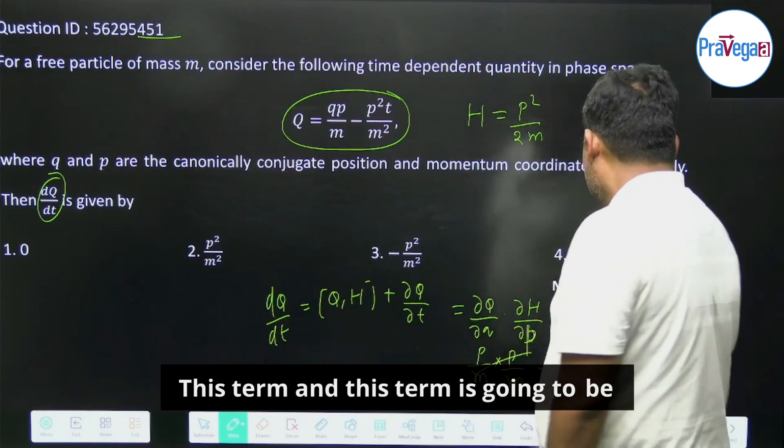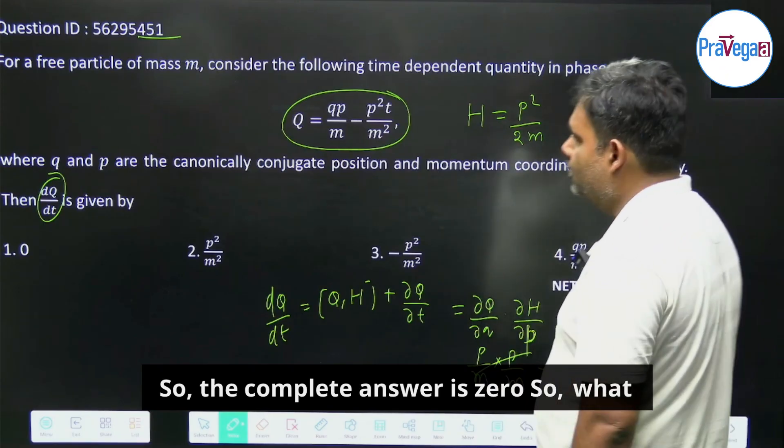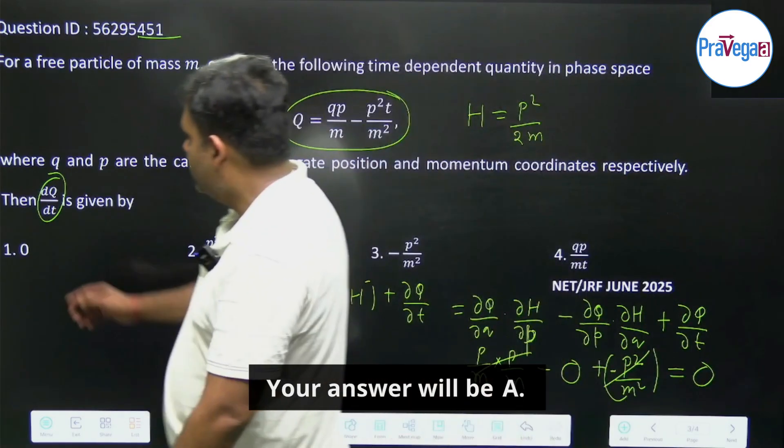So what will happen? This term and this term is going to be cancelled. So the complete answer is 0. So your answer will be A.